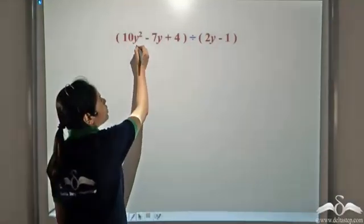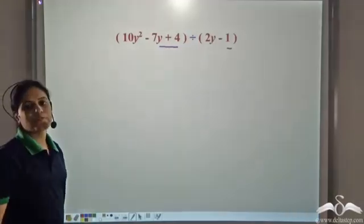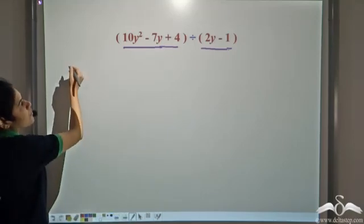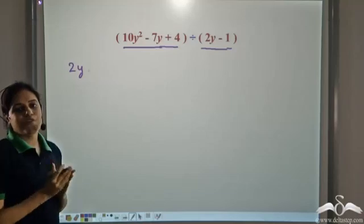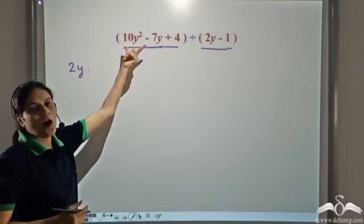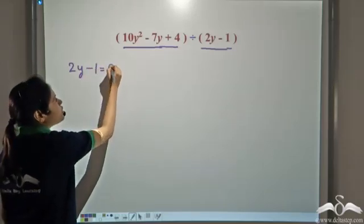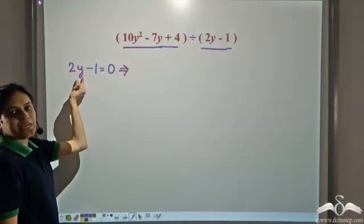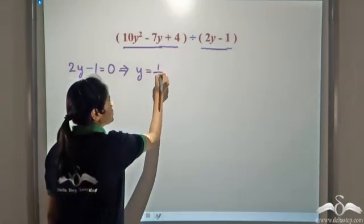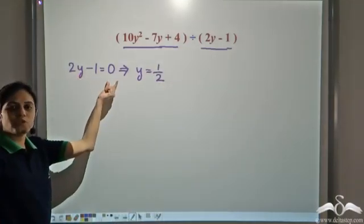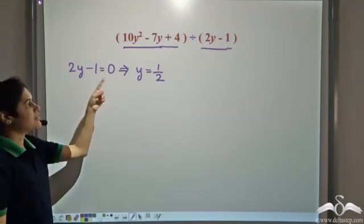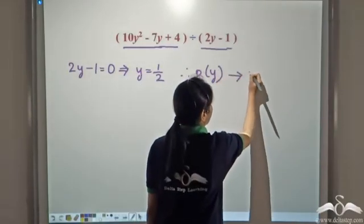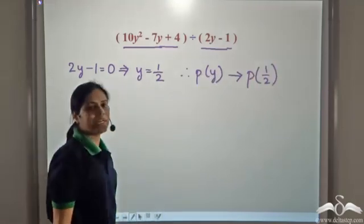What is the remainder when this polynomial is divided by 2y minus 1? We need to find the value of y at which to evaluate it. We put 2y minus 1 equal to 0 and solve: 2y equals 1, so y equals one half. So we need to calculate P(y) at y equal to one half, that is, we need to find P(one half).